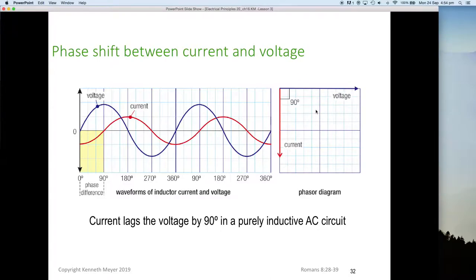Because our phasor is rotating anti-clockwise, this means the current will always lag the voltage by minus 90 degrees. I think they should have put a minus next to that 90. It's minus 90 degrees. So this display demonstrates: current lags the voltage by 90 degrees in a purely inductive AC circuit.